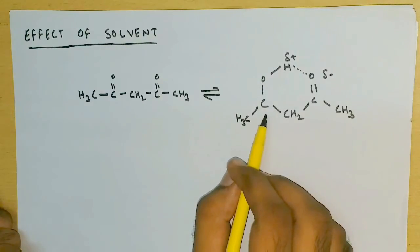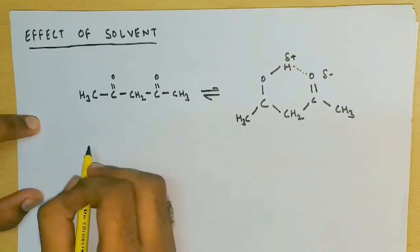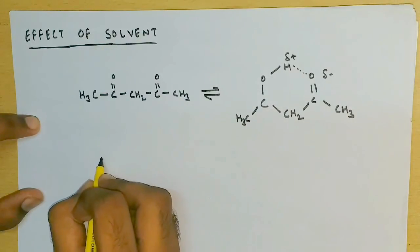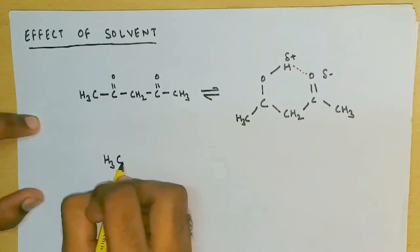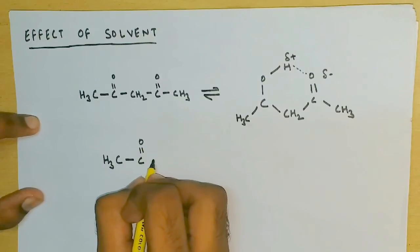But if the solvent is polar in nature, say water, it will affect the bond. I am going to draw the same molecule again to show you how it happens. Suppose the solvent is water and this is our molecule which I am drawing.